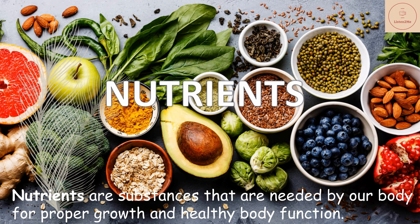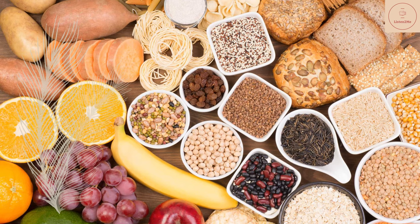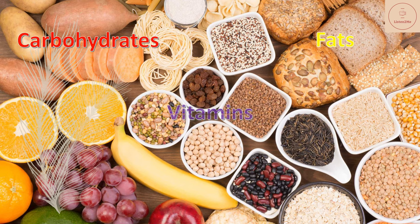Nutrients are substances that are needed by our body for proper growth and healthy body function. There are majorly five components. The major nutrients in our body are carbohydrates, fats, vitamins, proteins, and minerals. Food also contains dietary fibers and water. Let me explain each of these in detail.